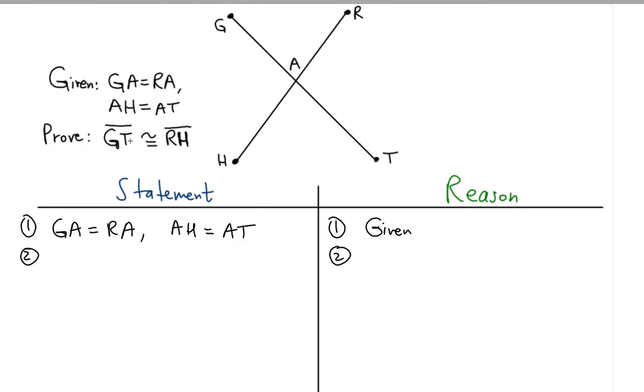Notice that we're given parts of the longest segments that we're interested in, because GT is the longest segment and so is RH. We're only given parts so far, so we have to use the segment addition postulate.